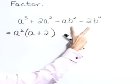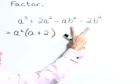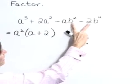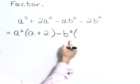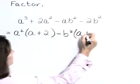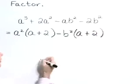Now let's look at those second two terms and pull out a greatest common factor of negative b squared. Negative b squared times a plus 2 will give those last two terms.